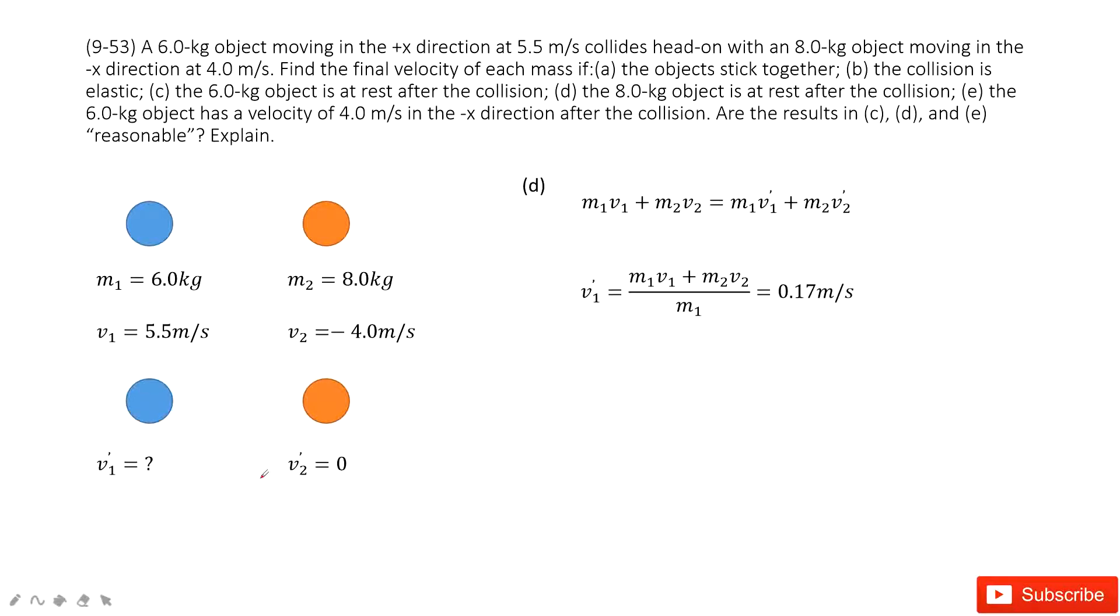The next one is, it tells you the V2 prime is zero. Can you find V1? Yes, we still consider the linear momentum conserved. And the initial momentum equals to the final. And input the known quantities is the final answer for V1 prime.